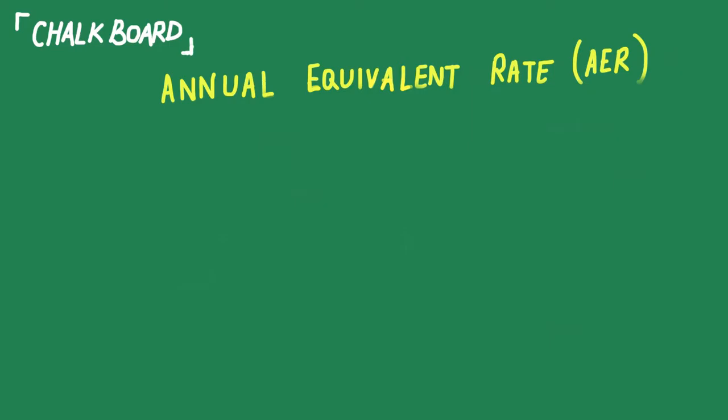Welcome back to Chalkboard tutorials. In this episode, we'll be looking at the Annual Equivalent Rate and going through a quick example. As I mentioned in my previous video, the market for deposit-taking bodies tends to be highly competitive.